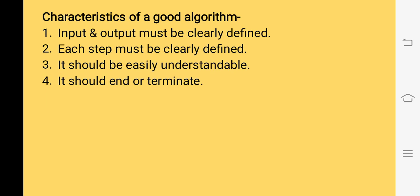There are some characteristics of an algorithm. First, the algorithm should be easy to understand. Then, in an algorithm, there should be clearly defined input and output — what inputs we require and what output we require. Every step should be clearly defined and the algorithm should end at some point.